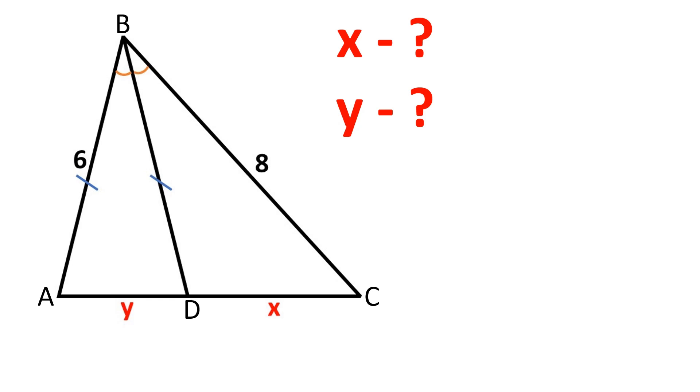Here is my solution to another viral geometry problem. If you'd like, you can click the pause button and try to solve this problem yourself before you watch the video. BD is the bisector of angle ABC. First, let's use the angle bisector theorem.